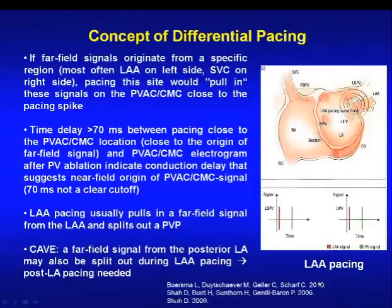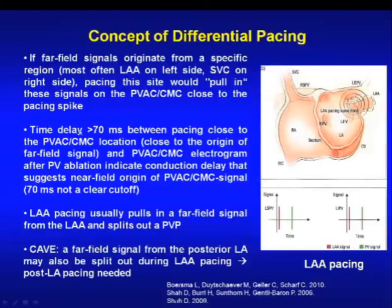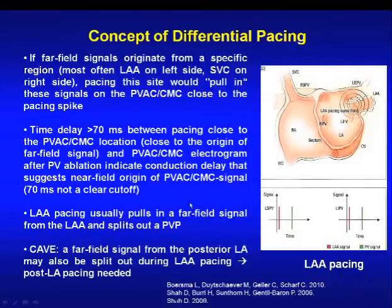To summarize differential pacing: if a far-field signal originates from a specific region, pacing that site will pull the signals on your PV mapping catheter close to the pacing spike. A time delay between the pacing spike and the electrogram indicates a conduction delay suggesting a near-field PV origin. A cutoff of 70 milliseconds is used, though it is not absolute, and you may need to pace more than one location around the pulmonary vein ostium.